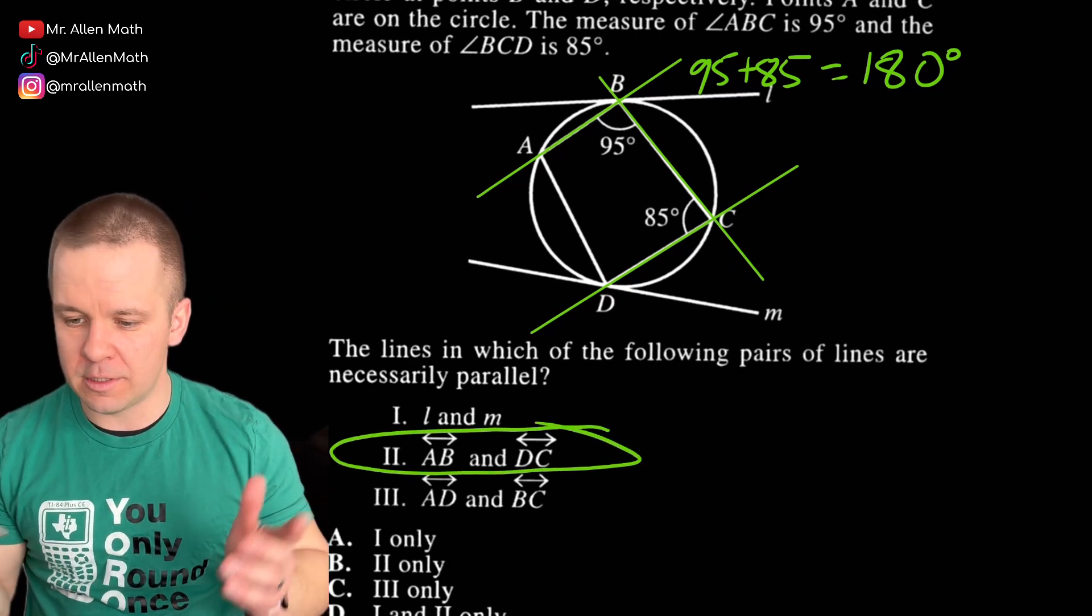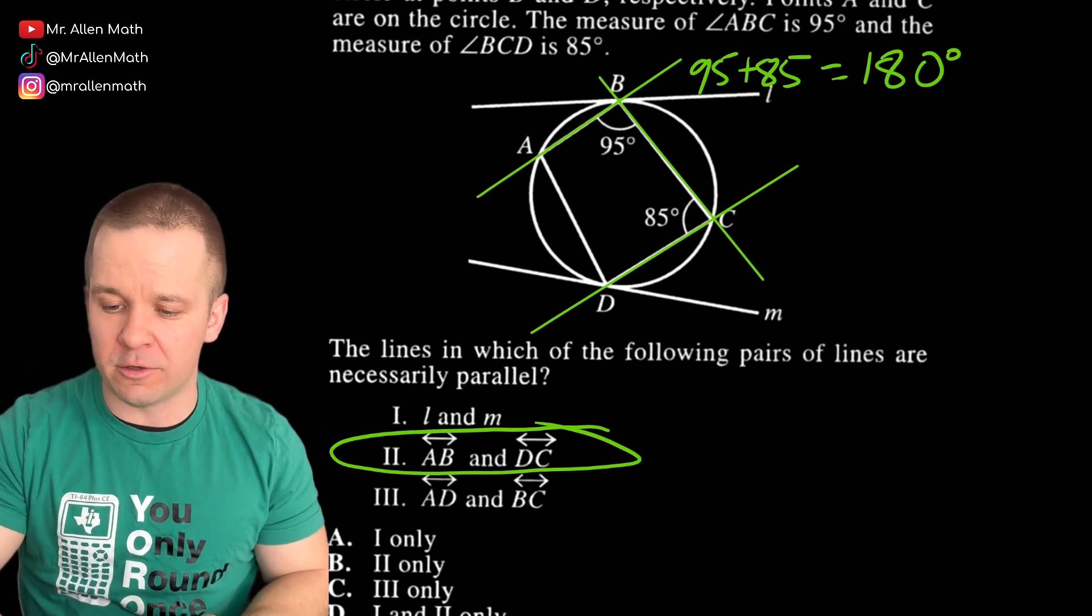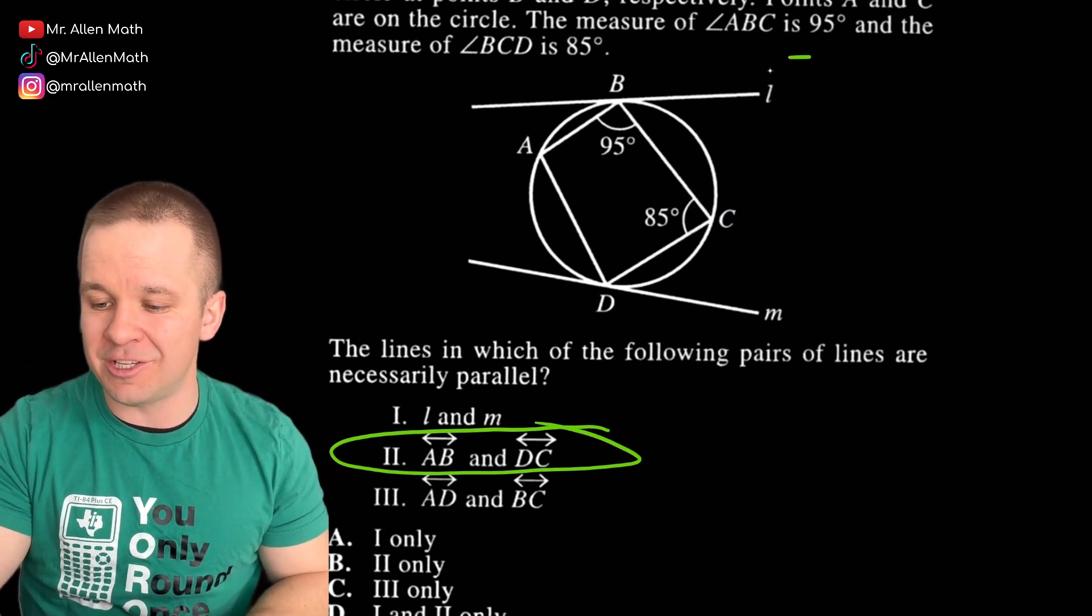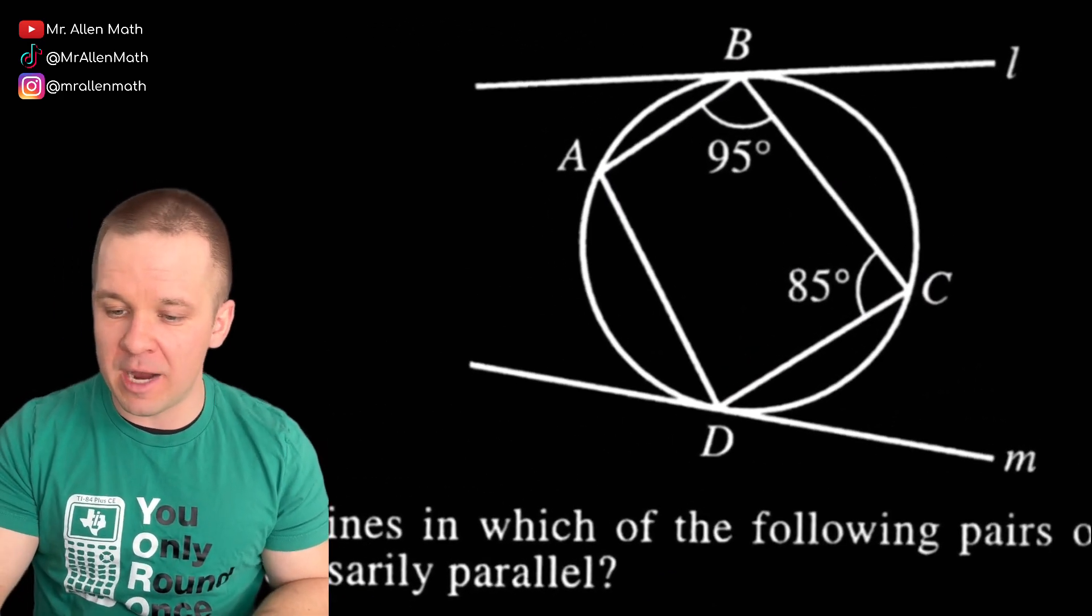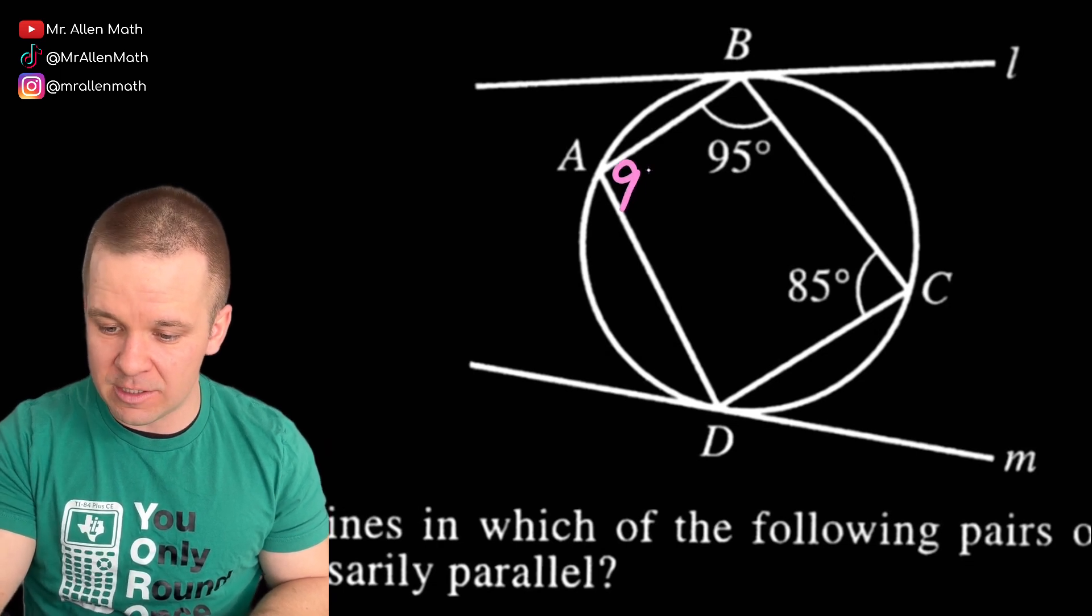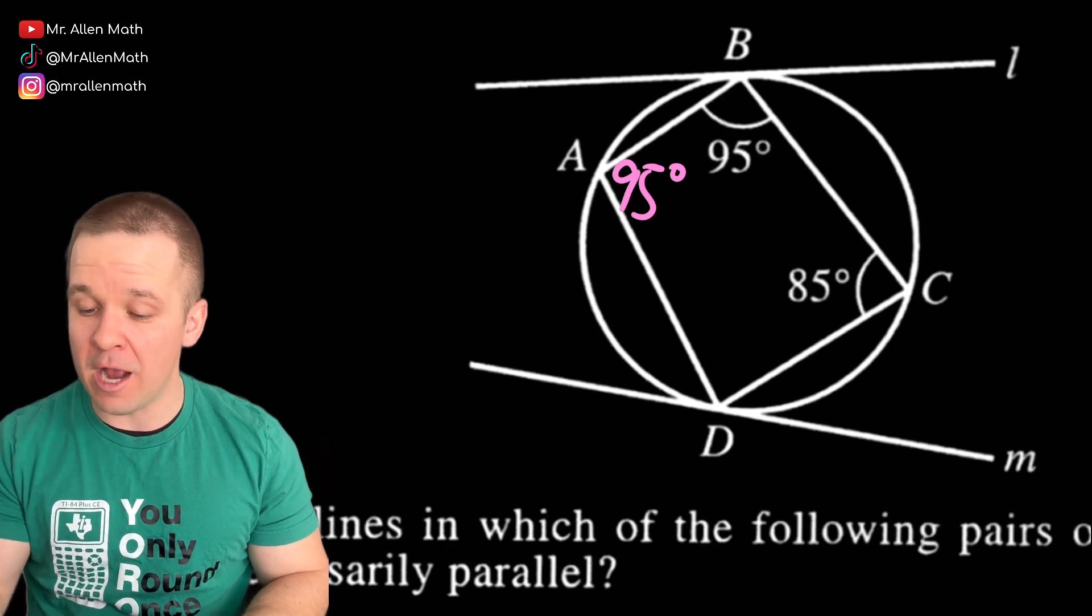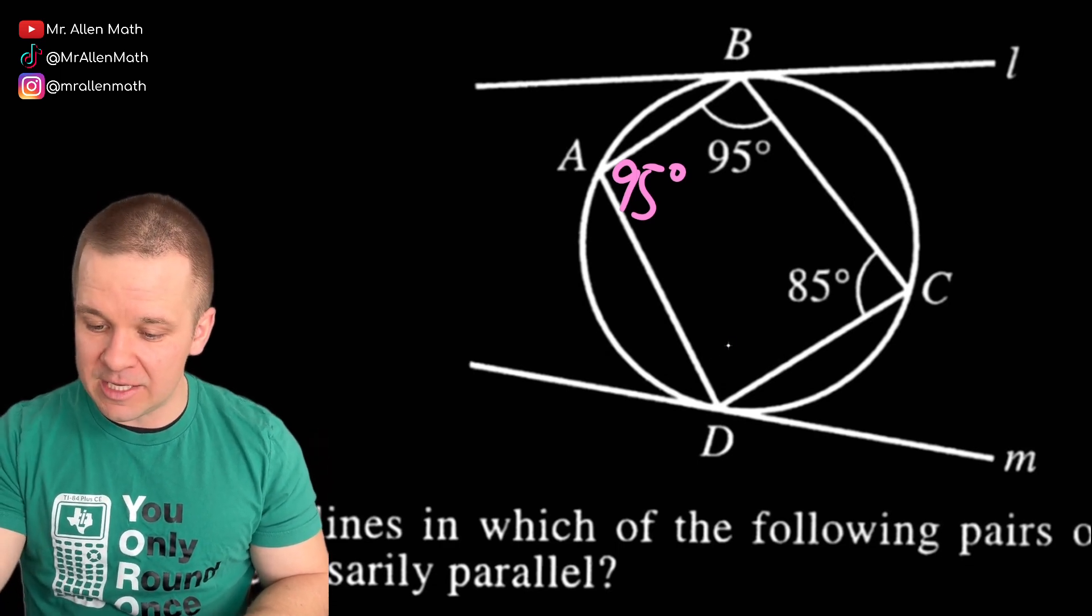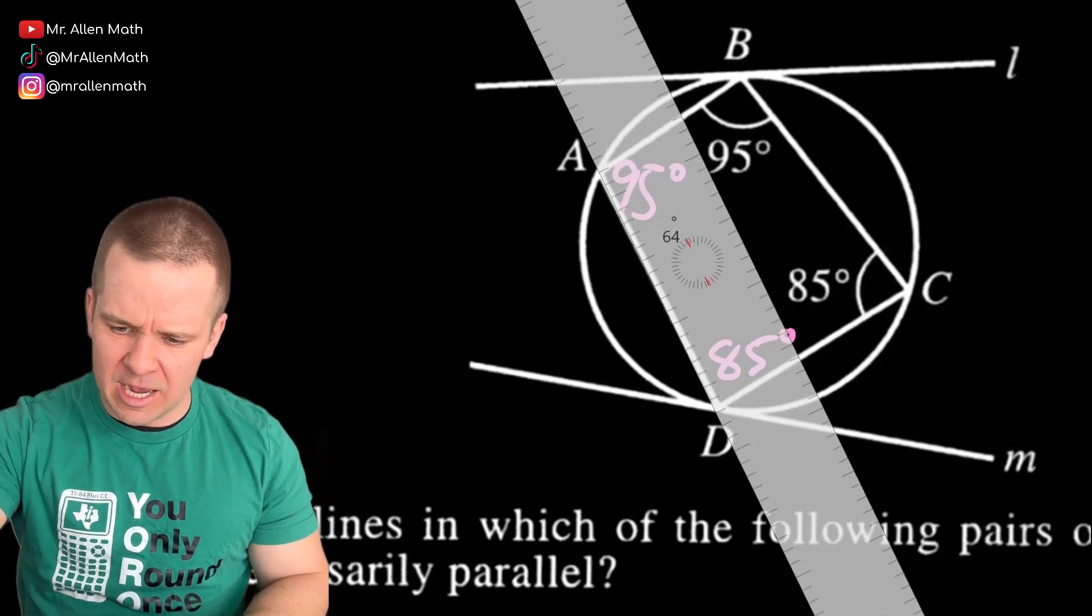And if they're supplementary, then the lines are parallel. Alternate exterior, alternate interior and corresponding, if they're congruent, then they're parallel, but same side interior and same side exterior, add up to 180 or the interiors, the ones that we actually do have, then we would know that those lines are parallel. Well, 95 plus 85, that is most definitely 180 degrees. Lovely. So I know right now for sure that AB and DC are parallel.